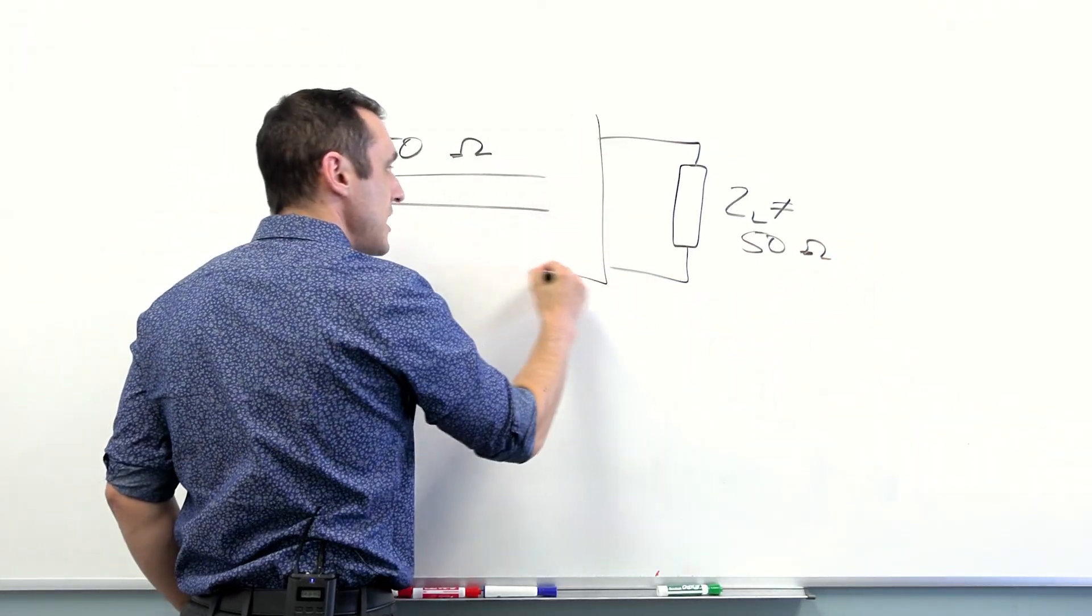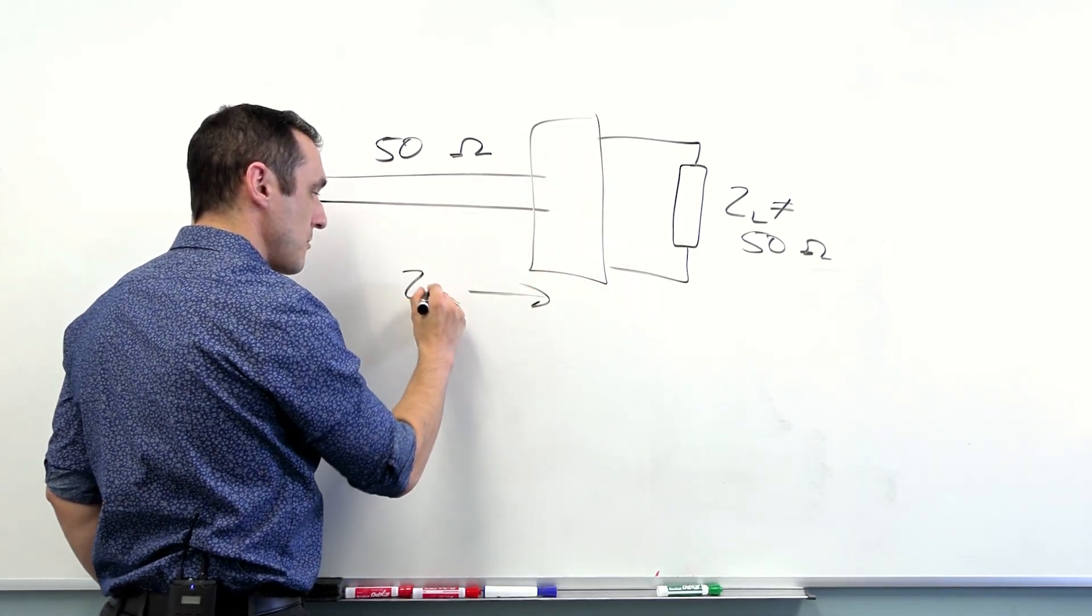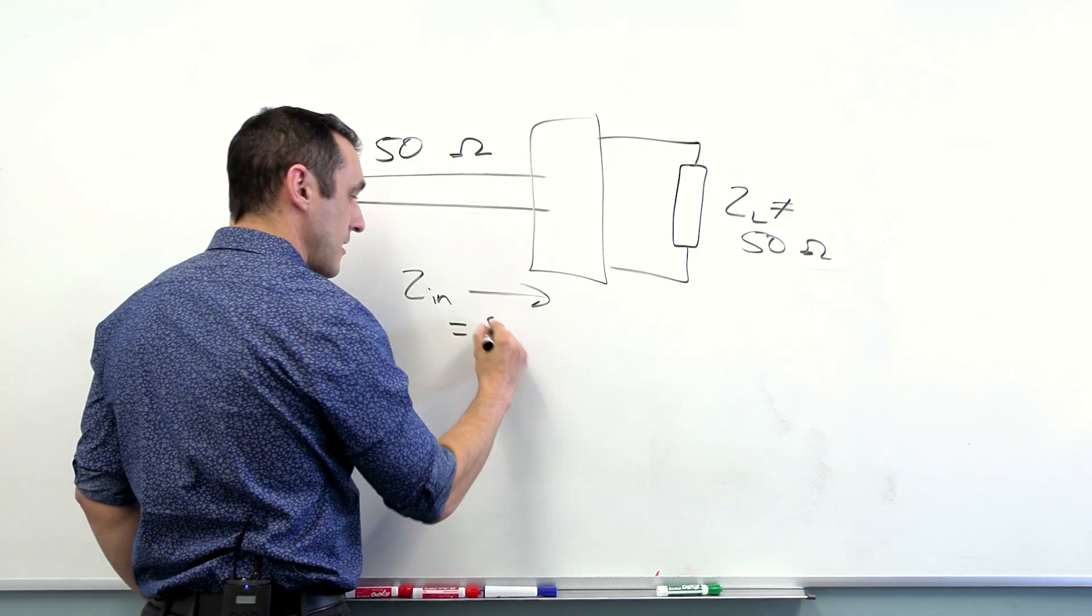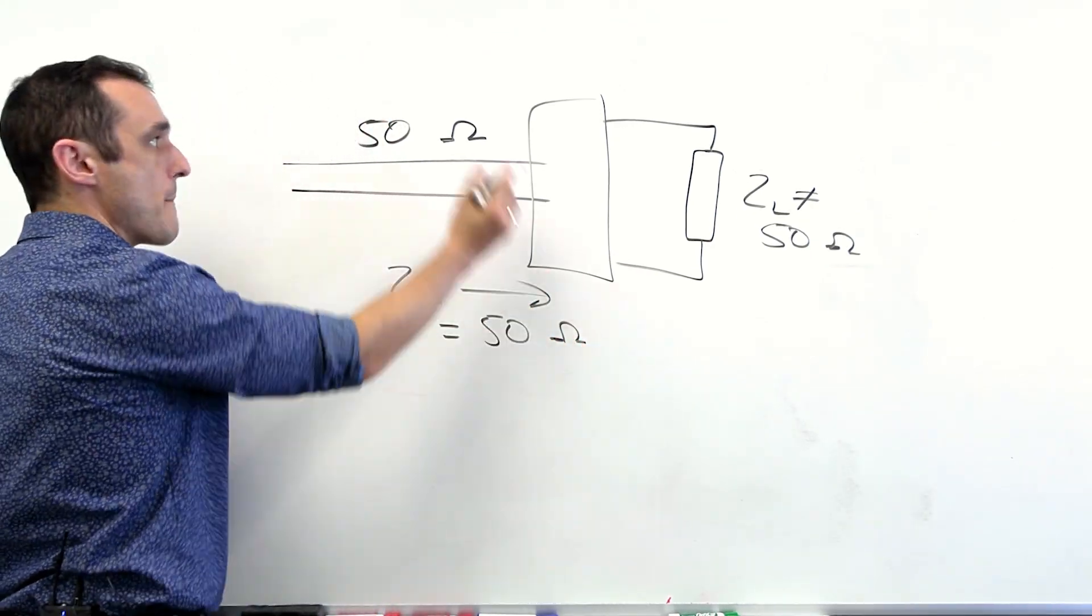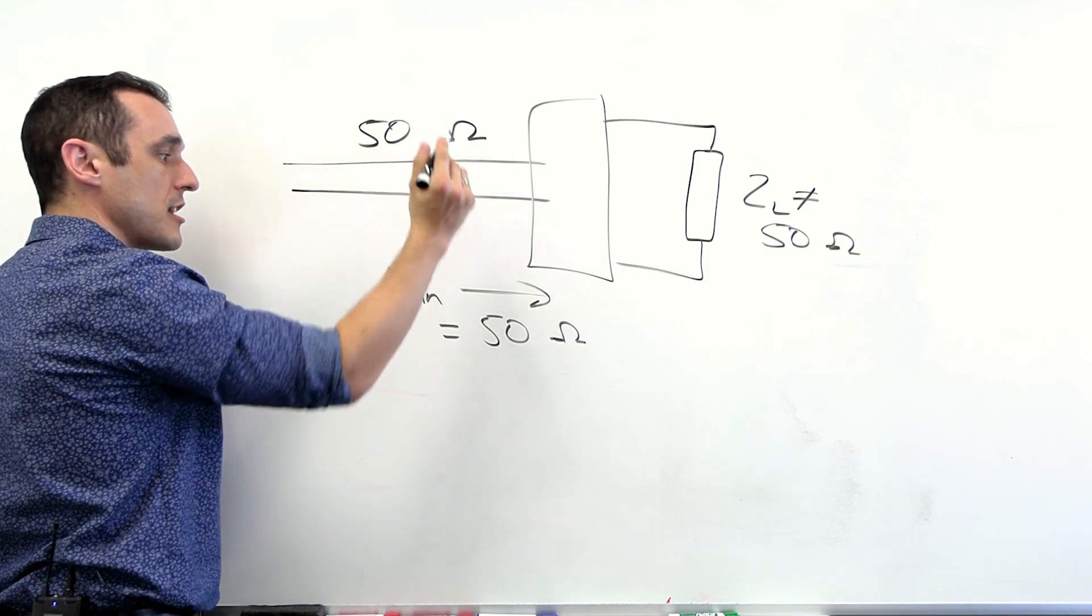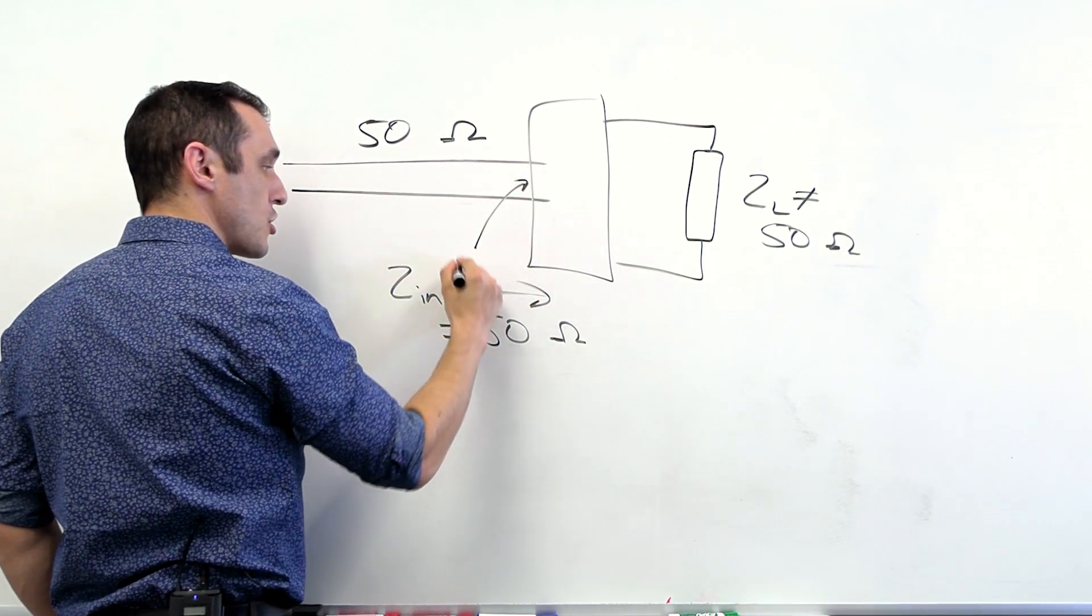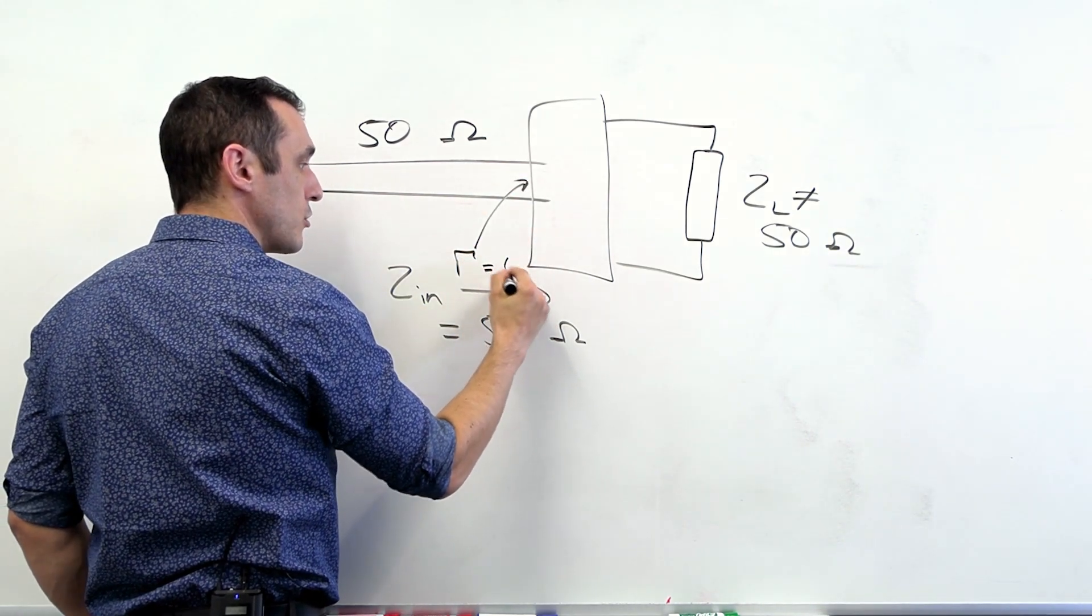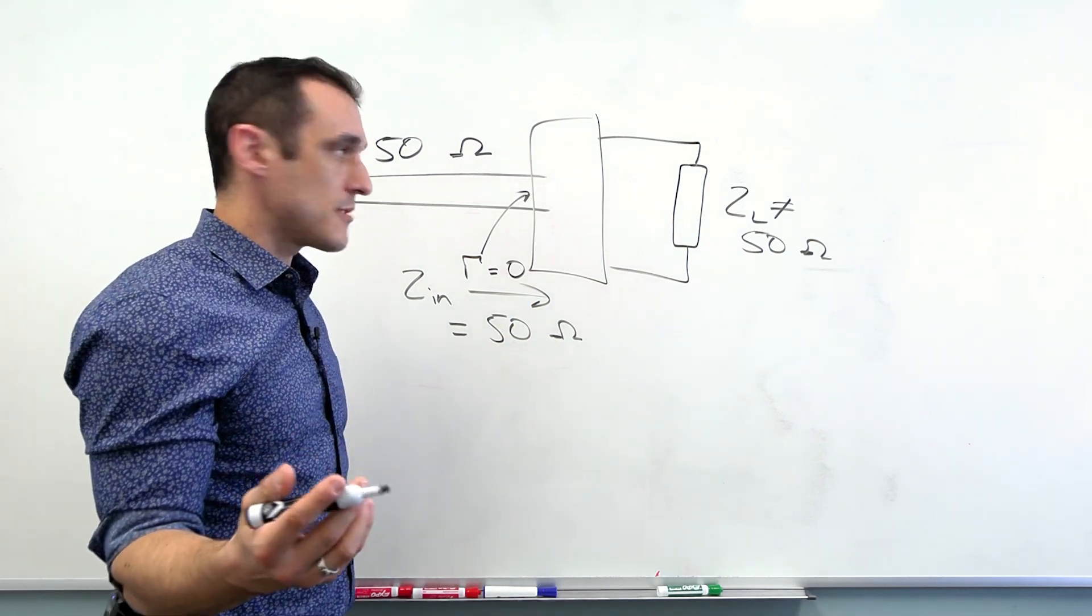I need to put something here such that the input impedance Z sub n looks like 50 ohms and I use 50 ohms here because that is the value that matches this feed line right here. So the idea here is that it sets the reflection coefficient gamma to be equal to zero. That's a really simple way to think of impedance matching.